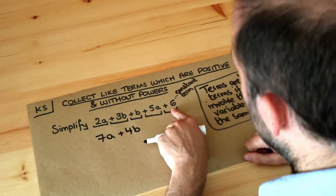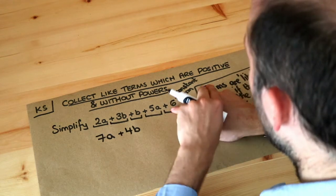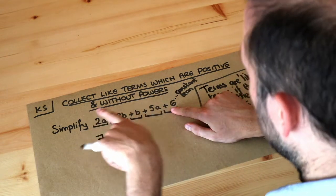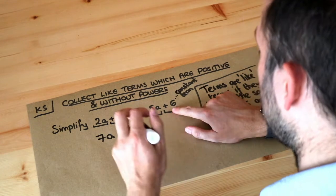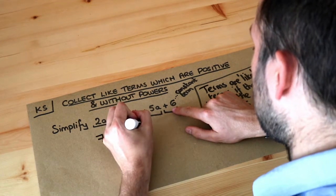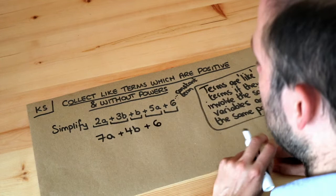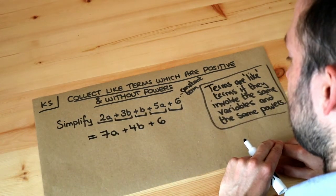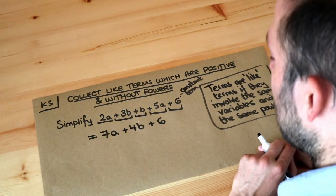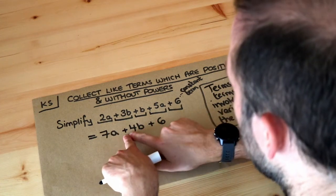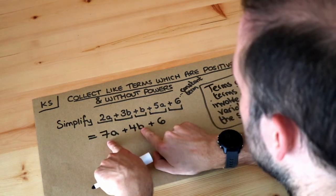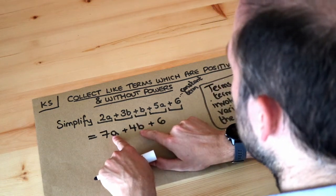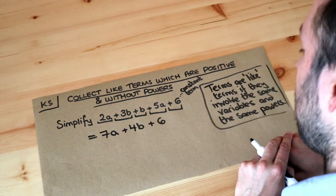Finally we've got the constant term, plus 6. There are no other constant terms, so we just put plus 6 on the end — and that is the final answer: 7a + 4b + 6. That's as simple as we can get this expression. We can't combine the a and b terms together because they're not like terms, so we can't simplify any further.